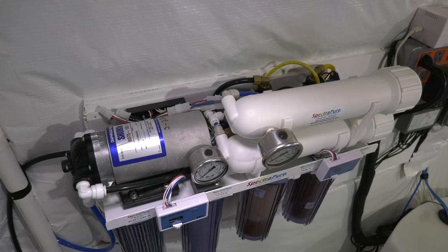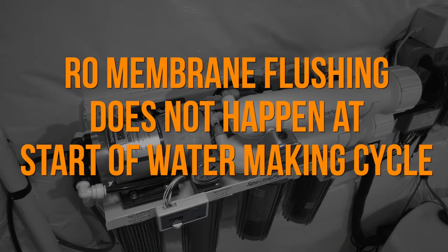While this unit automatically flushes the RO membranes, it does not flush them at the start of the water making cycle. Why not? Because don't you want to flush at the startup to prevent TDS creep?